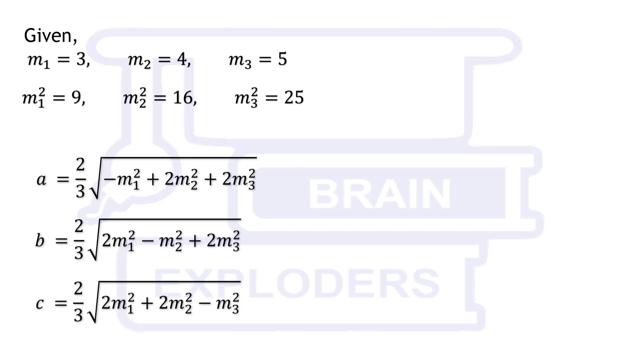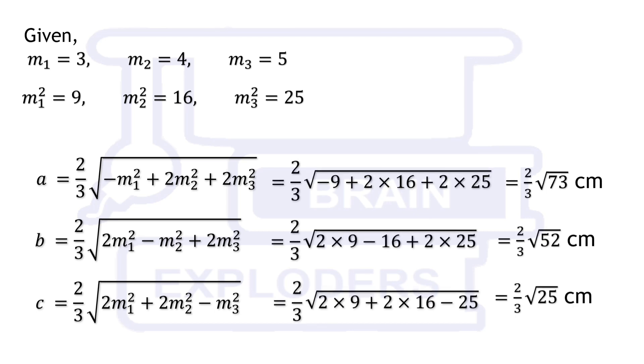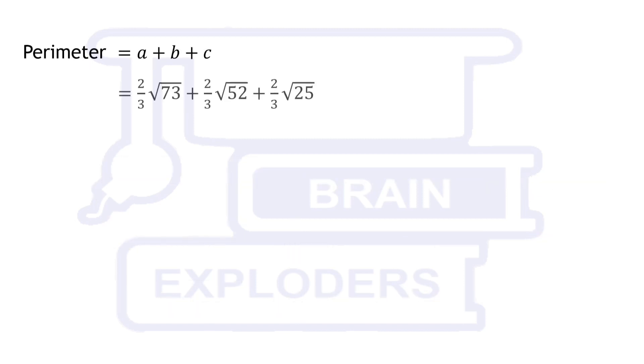On substituting these values in the obtained equations, values of A, B, and C comes out to be 2 by 3 root 73, 2 by 3 root 52, and 2 by 3 root 25 cm respectively. On adding all these, we get the perimeter which is approximately equal to 13.84 cm.